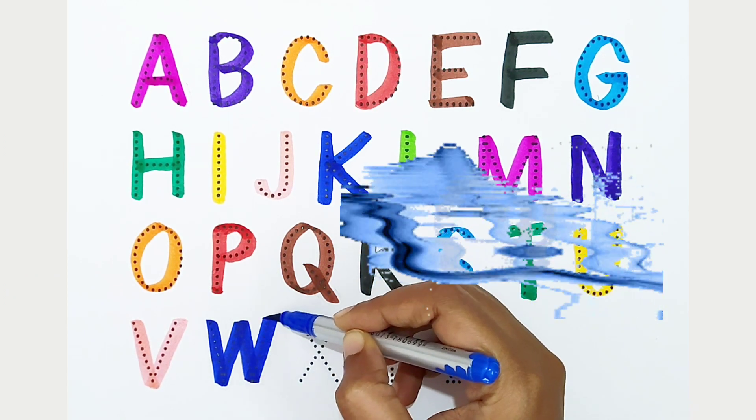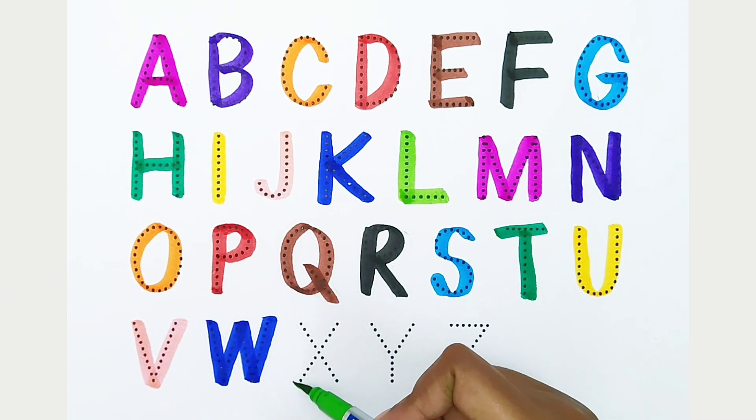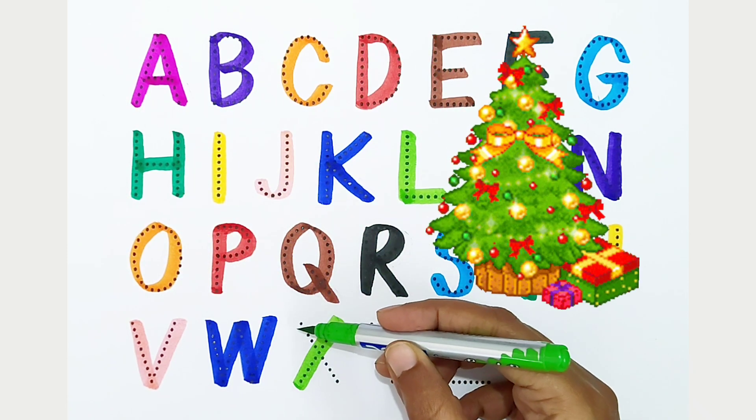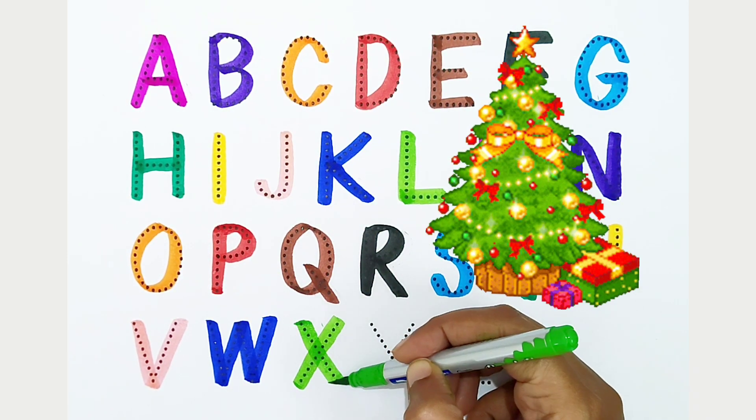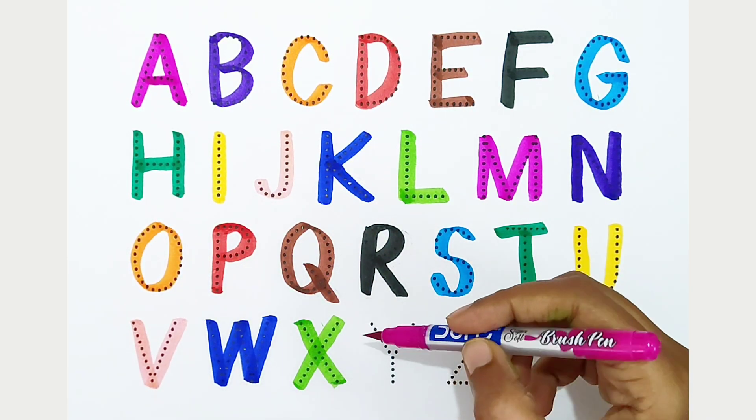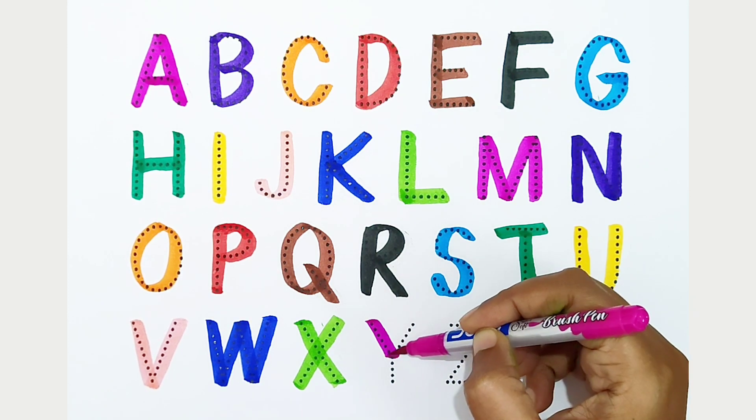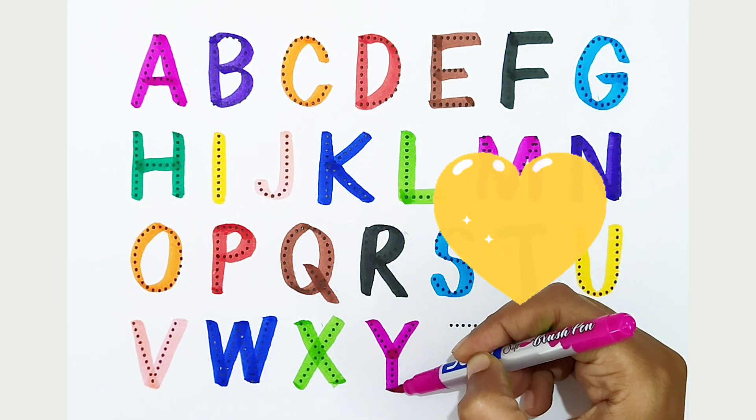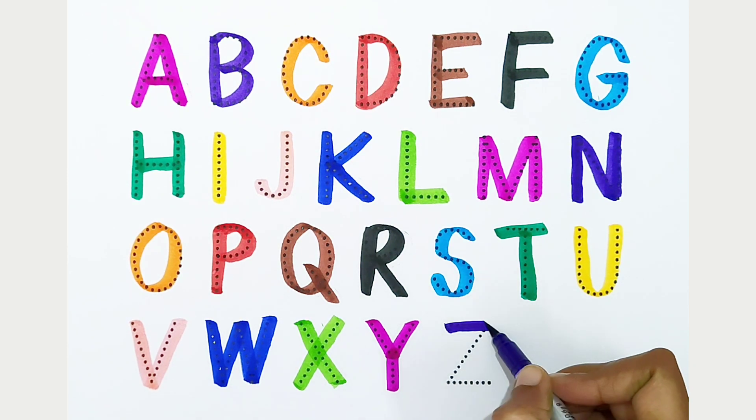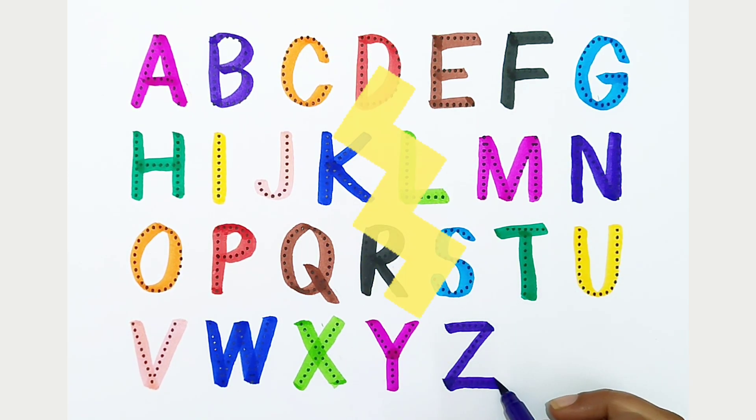X, light green color, X is for Christmas. Y, dark pink color, Y is for yellow. Z, violet color, Z is for zigzag.